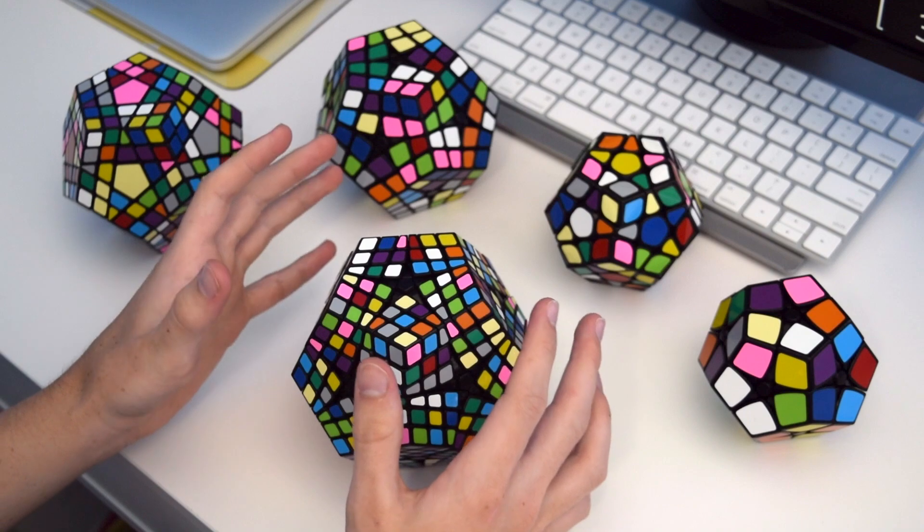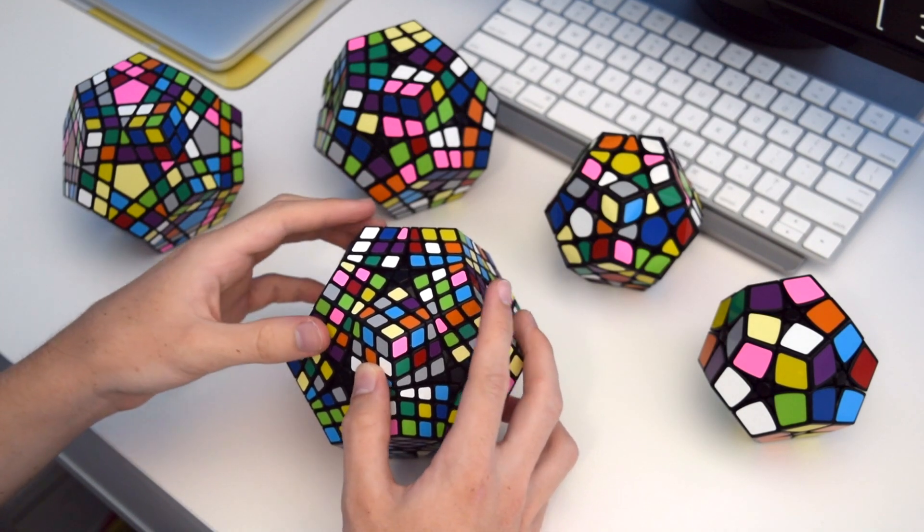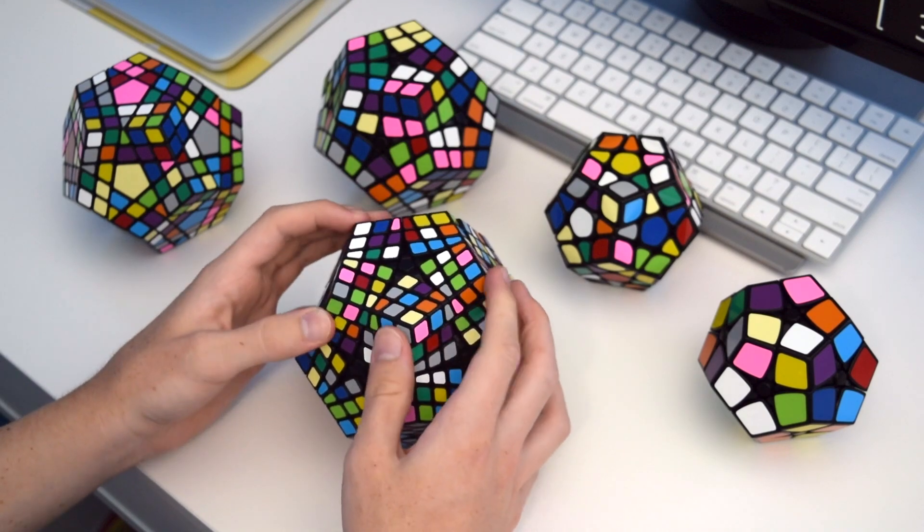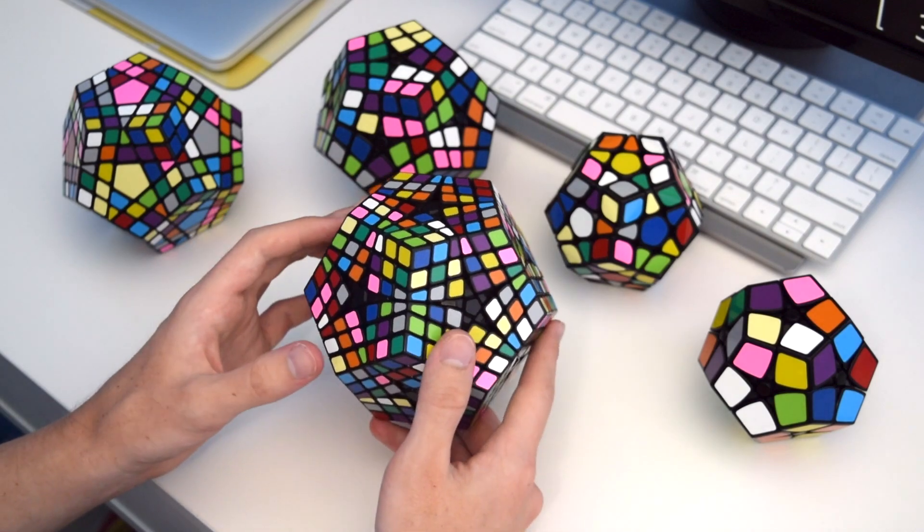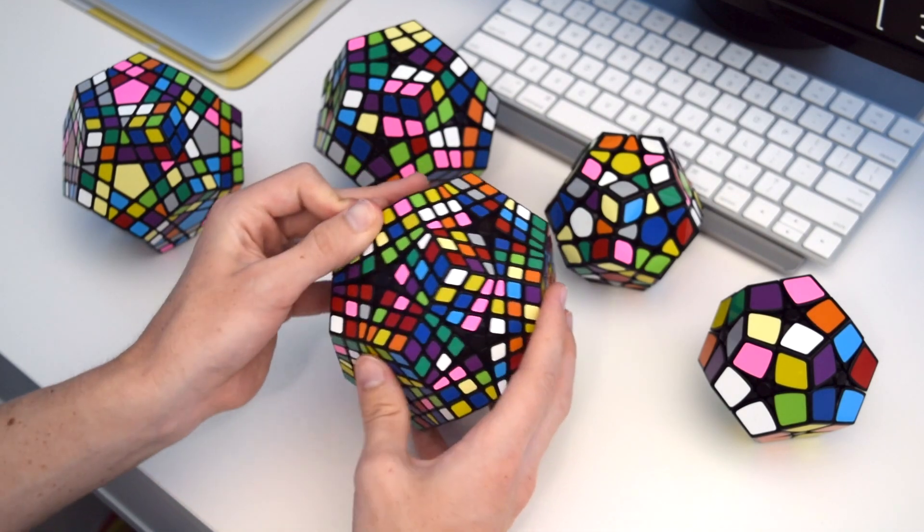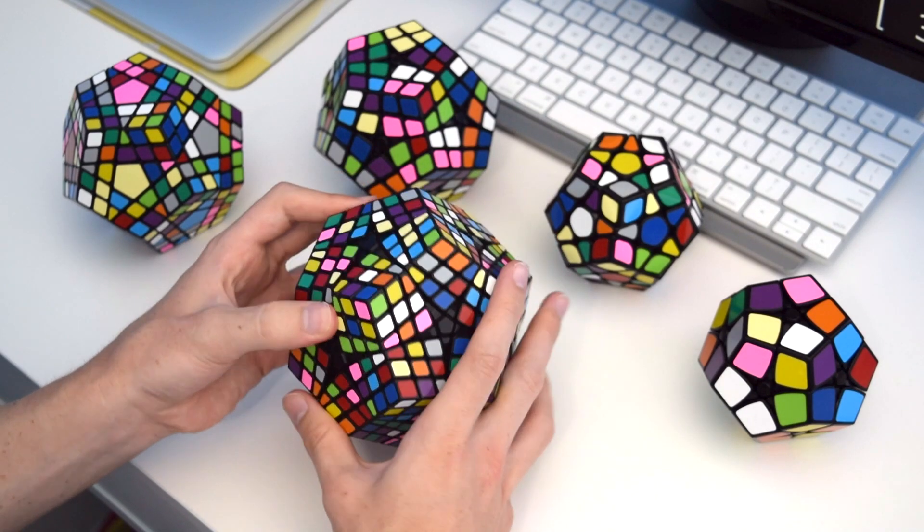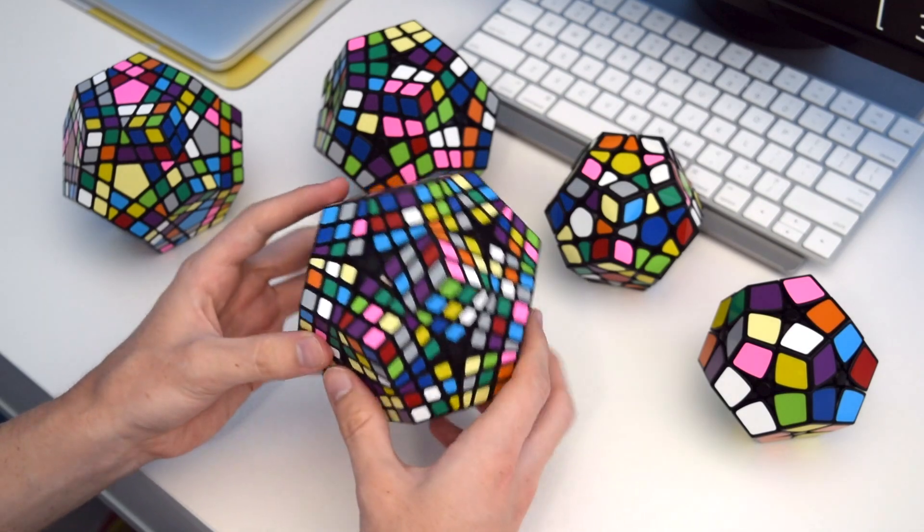Even just scrambling those took forever. They turn so well, but at the same time they just don't. I've never lubed them, so maybe some DNM would really help a lot, but for now I'm just going with it. These all look really scrambled, and they look really pretty scrambled, so I'm just hoping that none of the stickers fall off along the way.